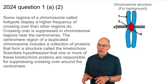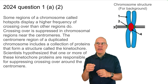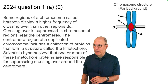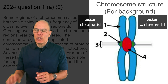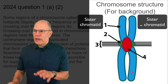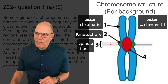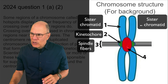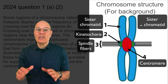For background, here's the structure of a condensed and already duplicated chromosome — the kind you'd see at the beginning of prophase one of meiosis or prophase of mitosis. What you have are two sister chromatids making up the entire chromosome; these are identical pieces of DNA replicated during S phase. There's a kinetochore — those are protein handles shown at position two — that spindle fibers grab onto to pull the sister chromatids apart. The two sister chromatids are held together by a region of DNA called the centromere.